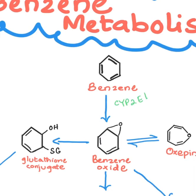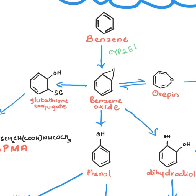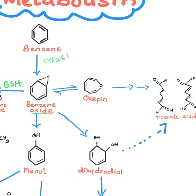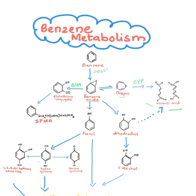Benzene is converted into benzene oxide, and this benzene oxide can be detoxified through glutathione conjugation, or it can convert into S-phenylmercapturic acid, written as SPMA. The benzene oxide can also convert into oxepin and then muconic acid through cytochrome P450.